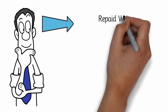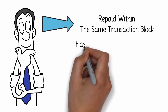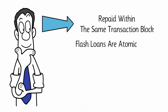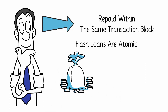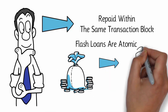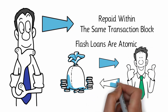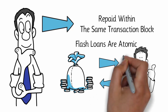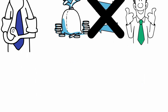The loan must be repaid within the same transactional block. Flash loans are atomic, meaning that if the entire process is not completed instantly, the loan will not go through, which completely minimizes the risk that platforms have for offering this feature. If someone asks for a flash loan but fails to repay it before the next transaction block is confirmed, the blockchain network will revert the transaction as if it was never requested in the first place.